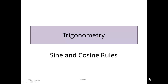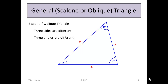Trigonometry: sine and cosine rules. The sine and cosine rules apply to all triangles, including the scalene or oblique triangle where the three sides A, B, and C are all different lengths, with no common marking indicating any two are the same length, and the three angles are all different also.